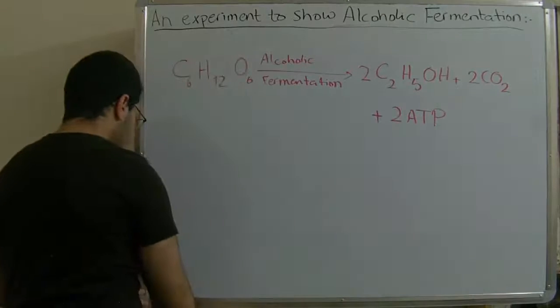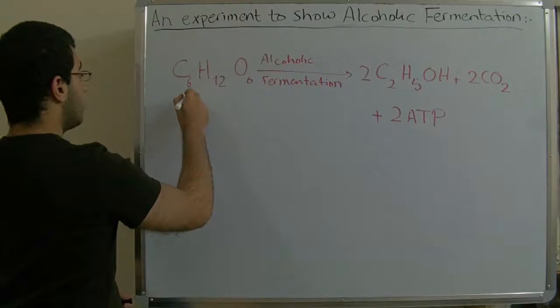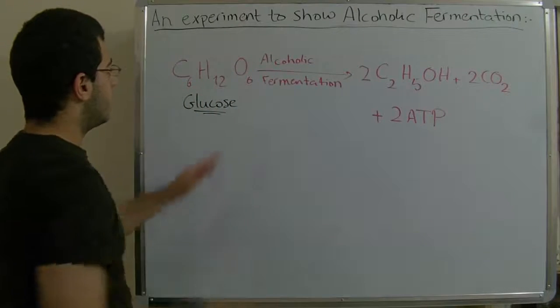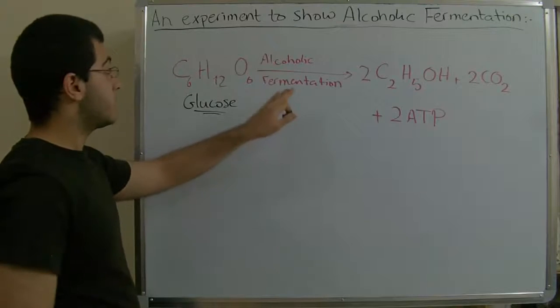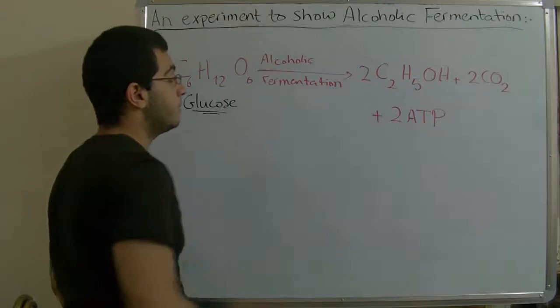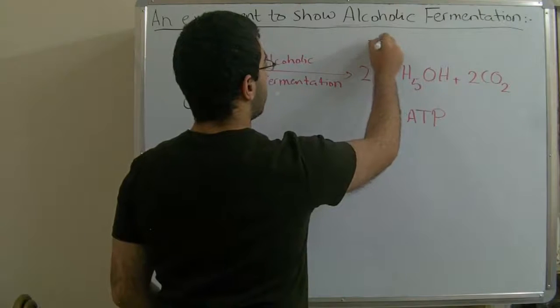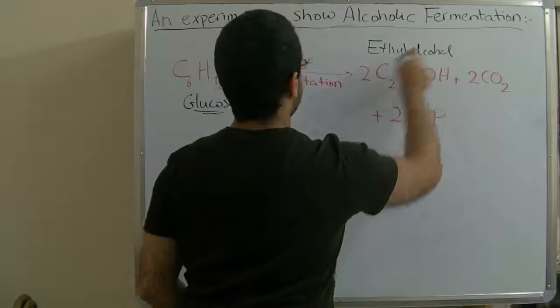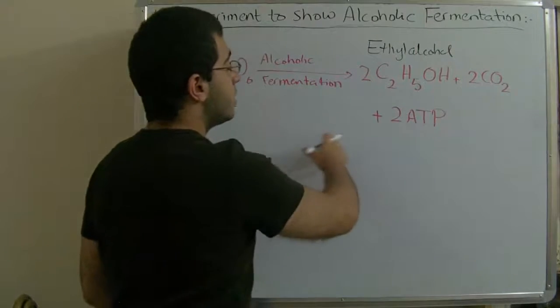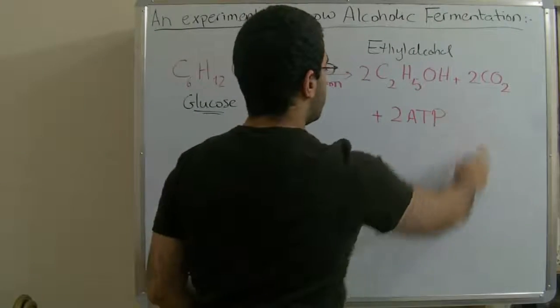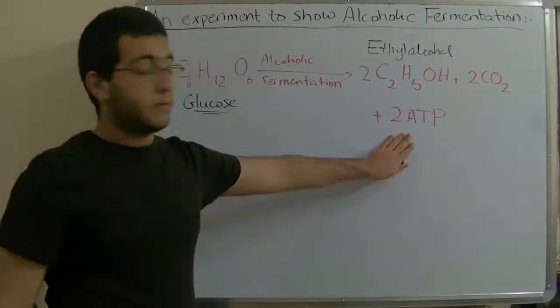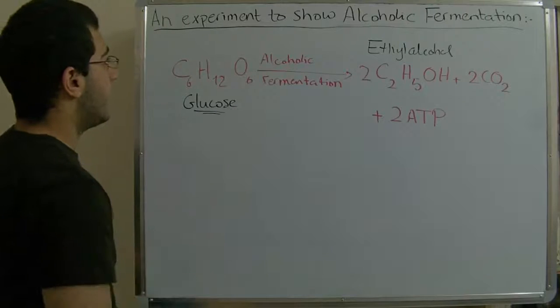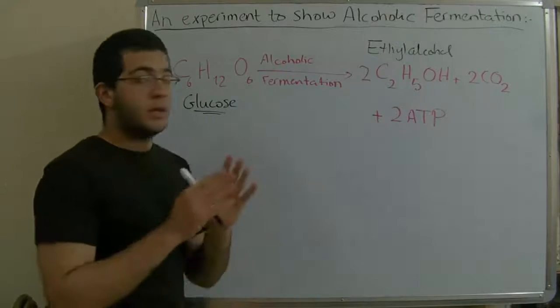This means that the glucose molecule, when it reacts with the yeast fungus during alcohol fermentation, we have 2 molecules of ethyl alcohol - that's why it's called alcoholic fermentation - with 2 molecules of carbon dioxide and an amount of energy equivalent to 2 ATP molecules produced. So this is the process of alcohol fermentation.